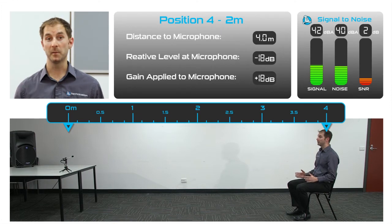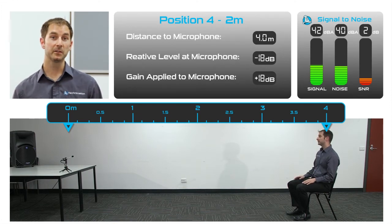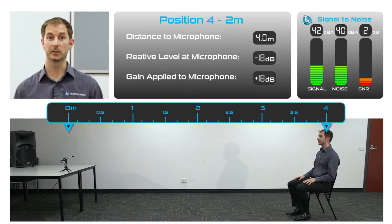And finally, back at 4 metres from the microphone, you're now hearing the result of only a 2 dB signal-to-noise ratio, and I'm sure you'd agree, the result is completely unusable for conferencing.